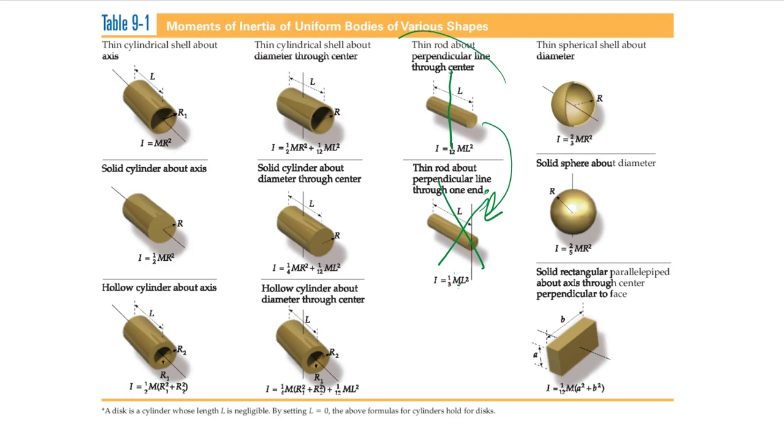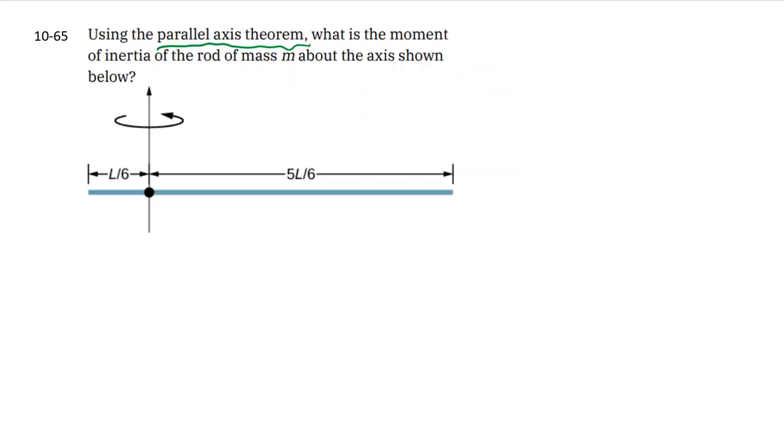So we will be using this one because it is a thin rod right through the center here. So we know I_CM, you go back to the table, is one twelfth M L squared, L being the entire length of the rod.